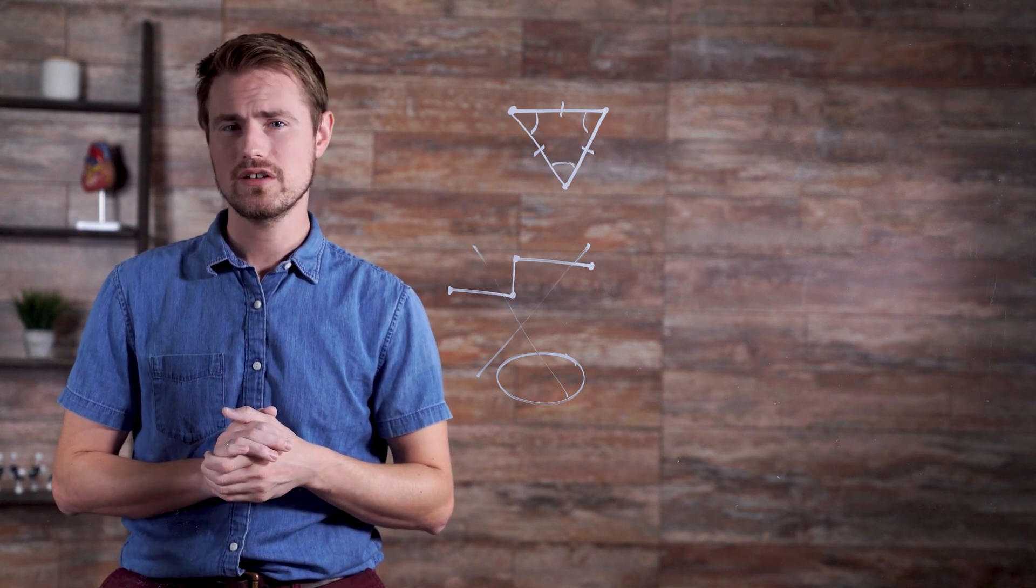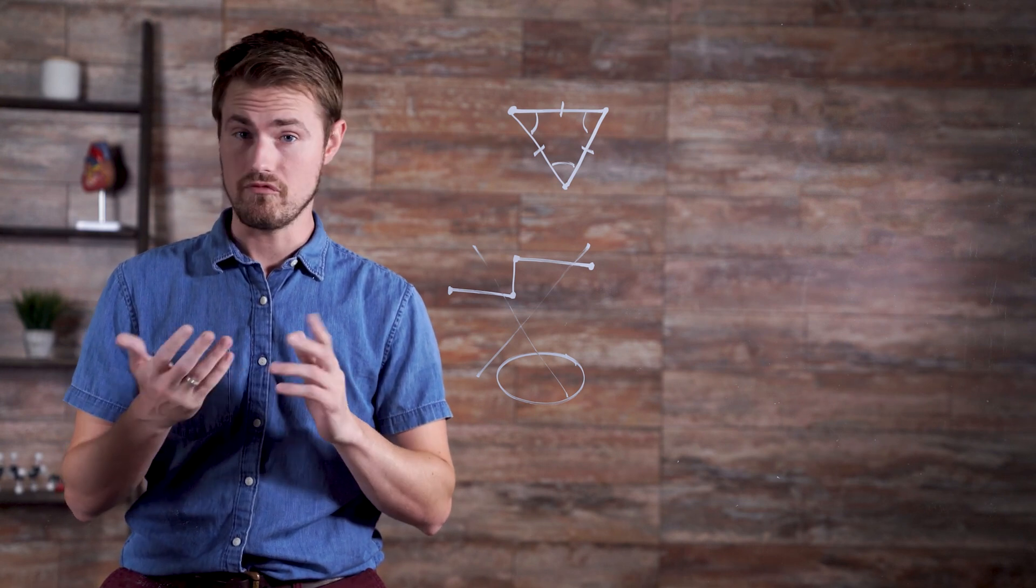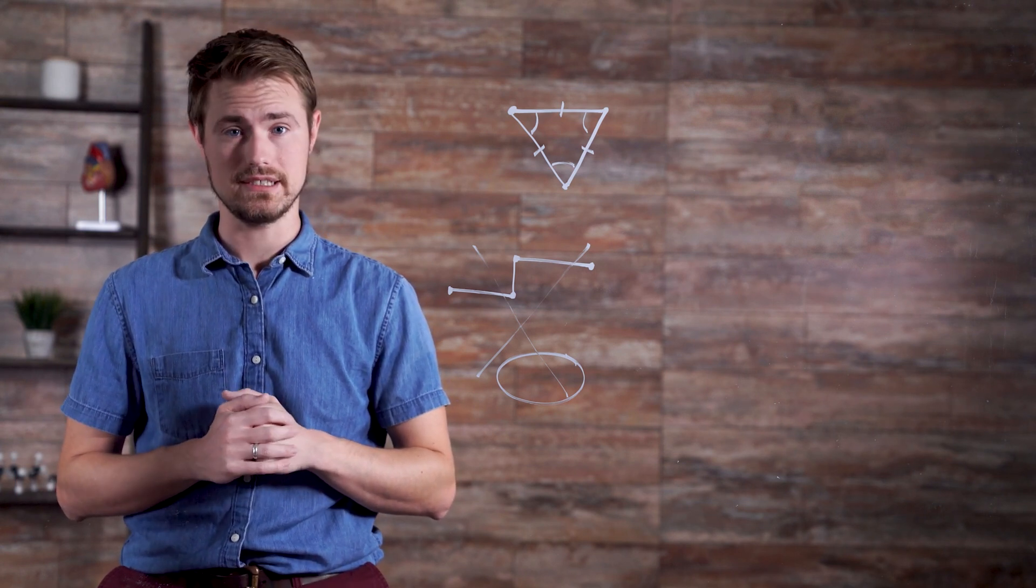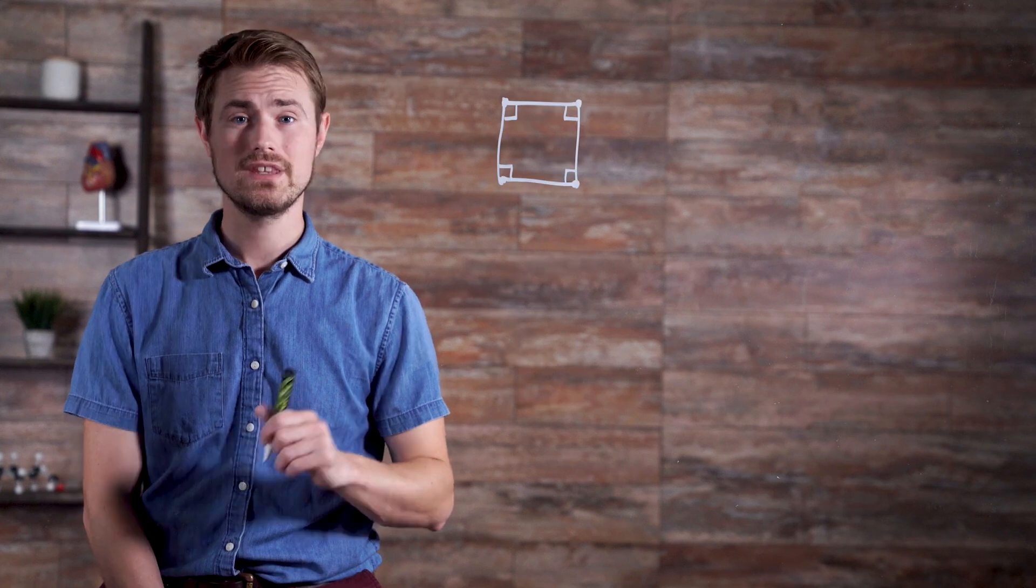Polygons can be regular or irregular. Regular polygons have congruent edges and congruent vertices. For example, this is a regular quadrilateral. The edges are the same length, and the vertices have the same measure.